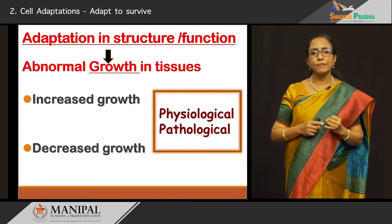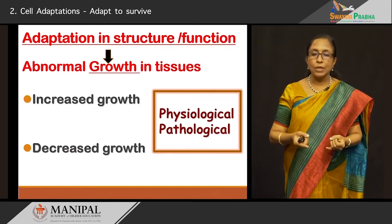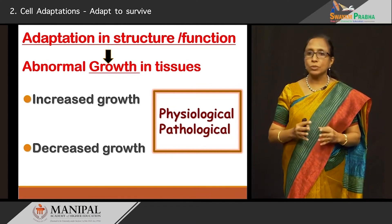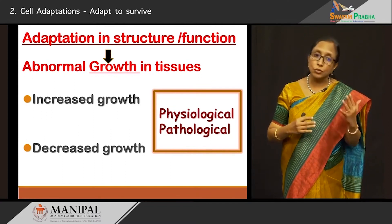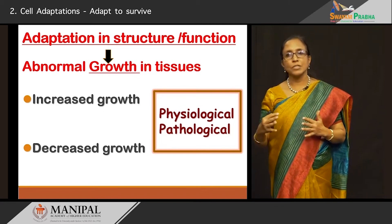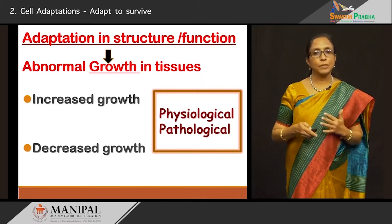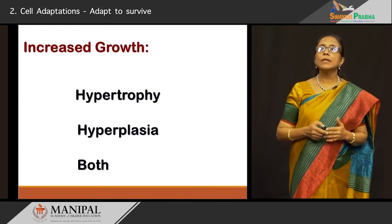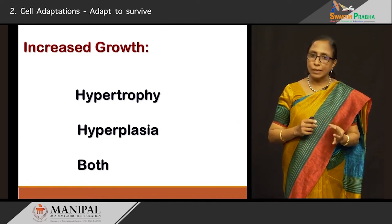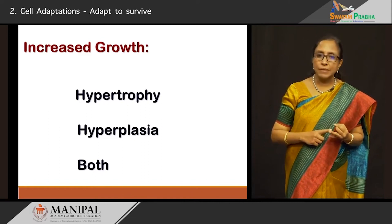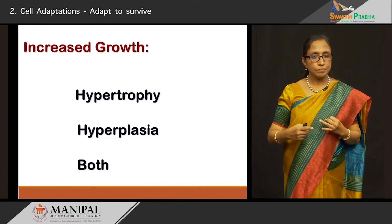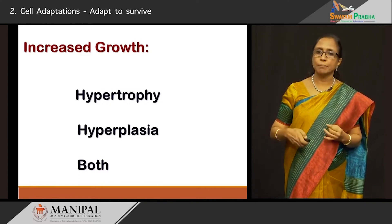Adaptations in structure and function — first of all we look at abnormal growths seen in tissue. The abnormal growth in tissue can either be in the form of increased growth or decreased growth, seen in both physiological and pathological conditions. In increased growth, there are three main adaptations: hypertrophy, hyperplasia, or situations where both hypertrophy and hyperplasia occur together. We will look at each one individually.